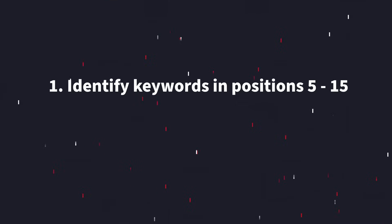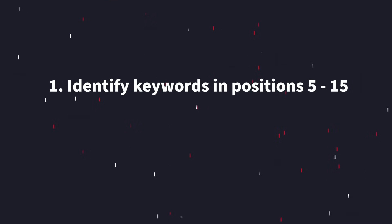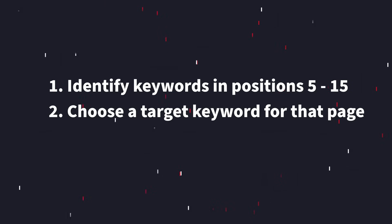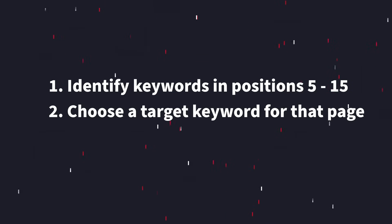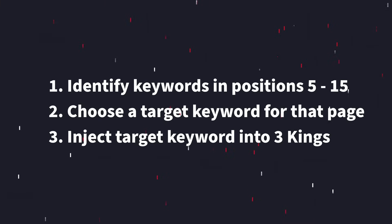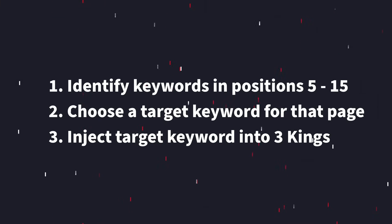Now back to the technique. The low-hanging fruit content refresh really involves only three steps. The first is to identify keywords for which your site ranks between positions 5 and 15. The second is to choose or identify your target keyword. And the third is to inject that target keyword into what SEOs call the three kings.